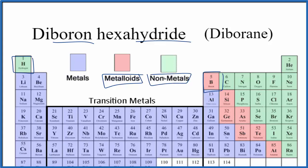So we have a metalloid and a nonmetal. When we have a metalloid and a nonmetal, we consider that a molecular compound, and we have to take these prefixes into account when we write the formula for diboron hexahydride.